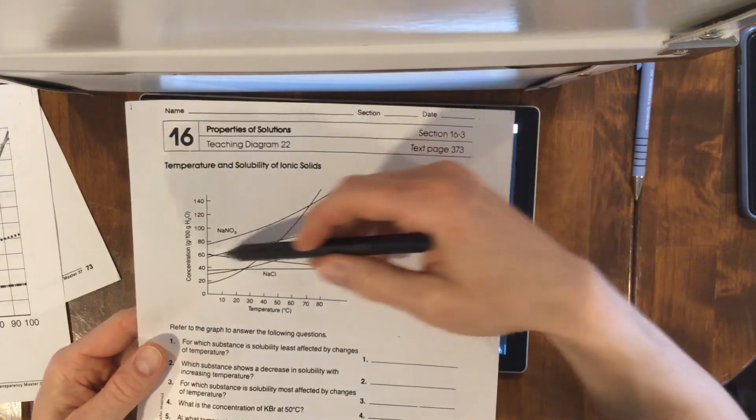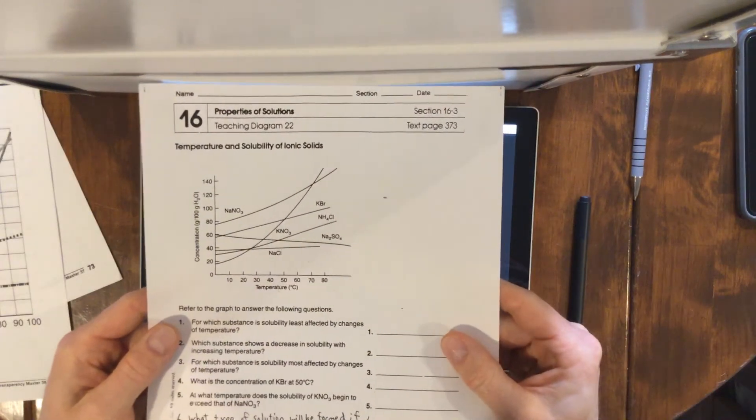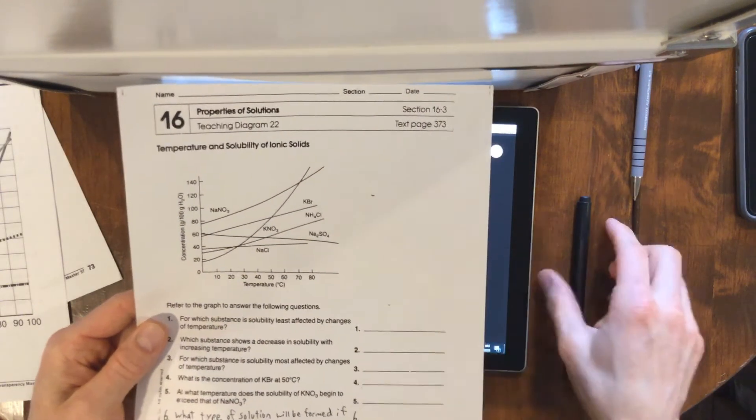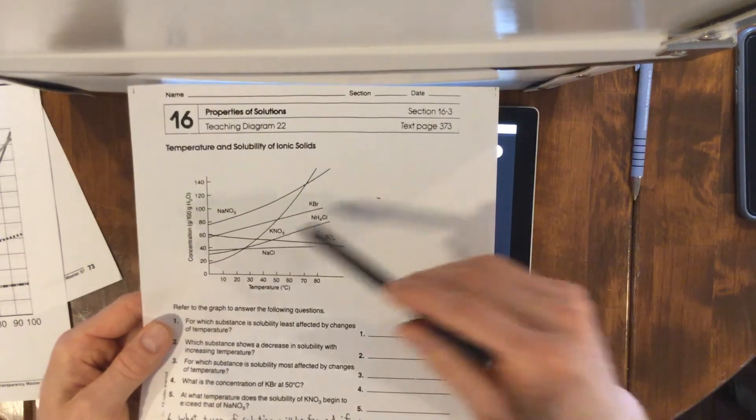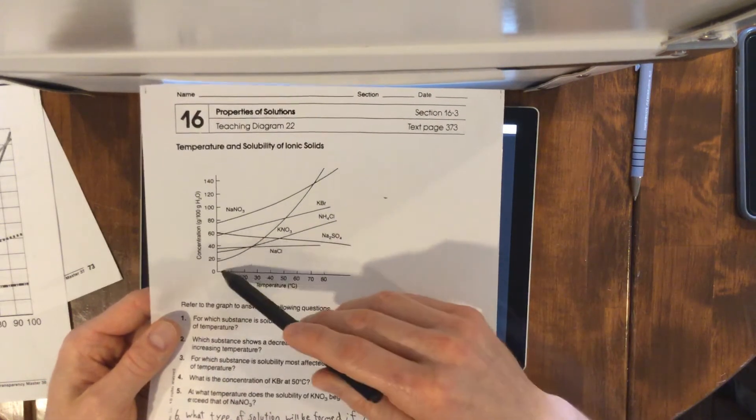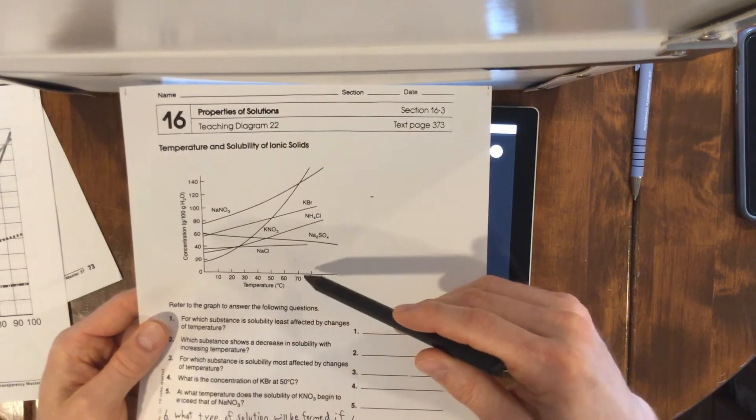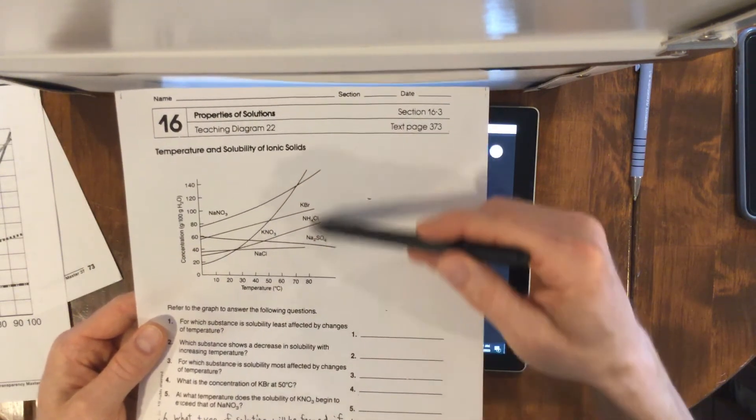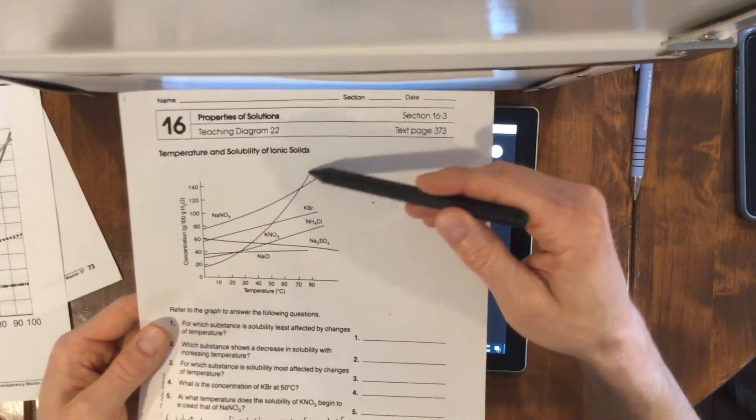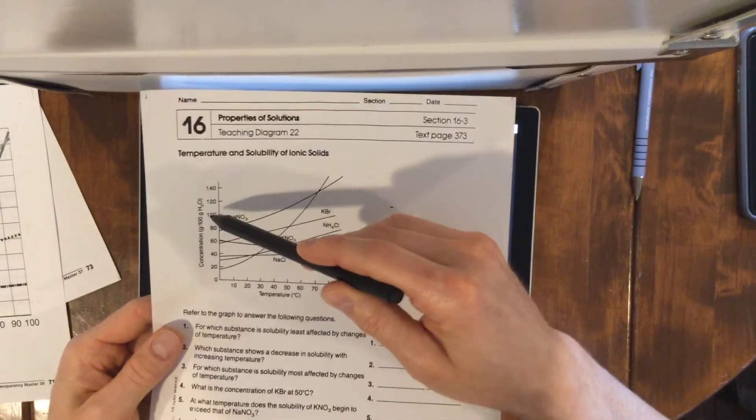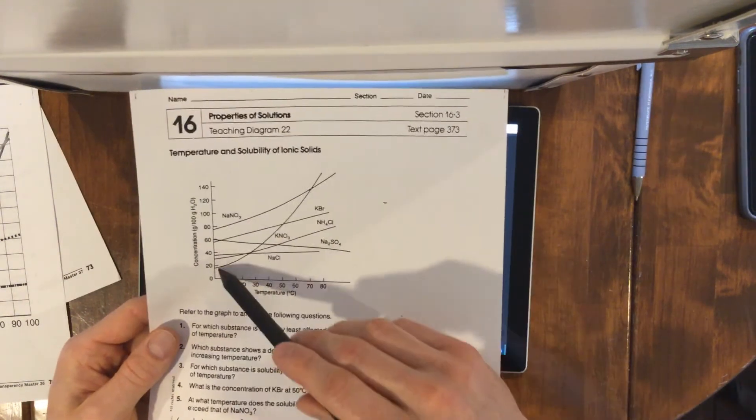Which substance's solubility is most affected by temperature? The one that changes the most dramatically: KNO3. At zero degrees you can dissolve 18 grams, and then at 80 degrees you can dissolve over 140. That's a tiny amount of water - you can add a ton of KNO3 at 70 degrees compared to zero.